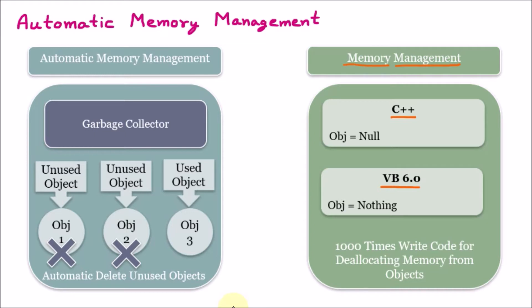Let's take some example here. This is a program we have created — some kind of code. In this code, let's say I have created some objects. We know that objects are part of classes. Whenever we create a class, their object is created. So object 1, object 2, object 3 — they take some memory. When we create the program, these objects are created, and afterward we close the program. We don't do anything with the allocated memory, but these memories remain in the system — they are a wastage of memory.